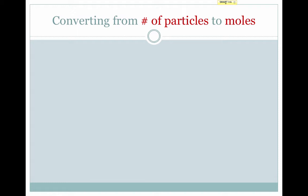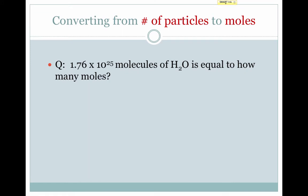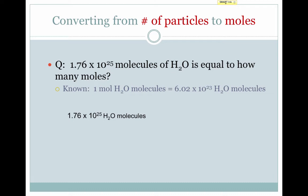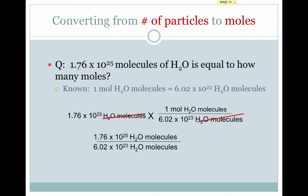We can also go the other direction — we can convert from number of particles to moles. An example: 1.676 times 10 to the 25th molecules of H₂O is equal to how many moles? Using a conversion factor, we know that one mole of H₂O molecules equals 6.02 times 10 to the 23rd H₂O molecules. We write the given, multiply it by our conversion factor — one mole of water molecules over 6.02 times 10 to the 23rd water molecules — our units cancel, and we get 29.2 moles of water.